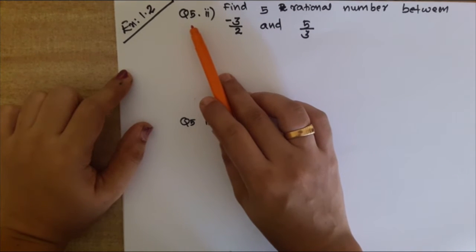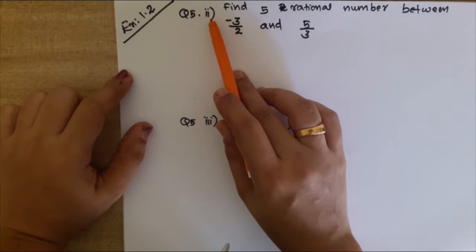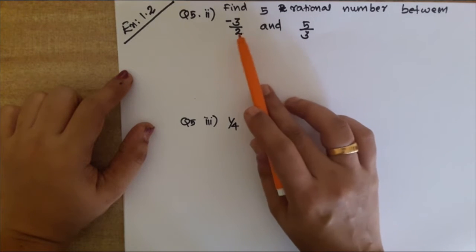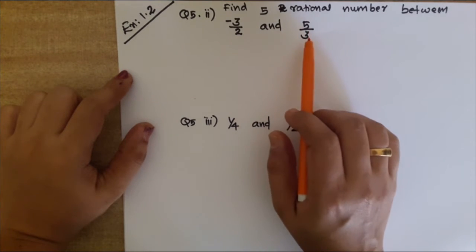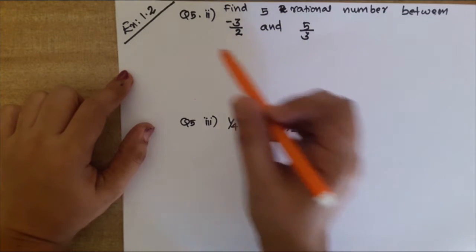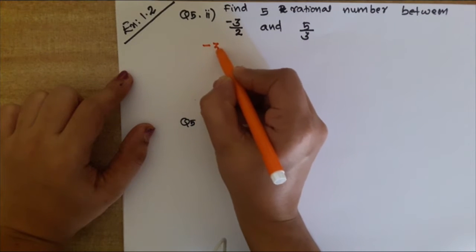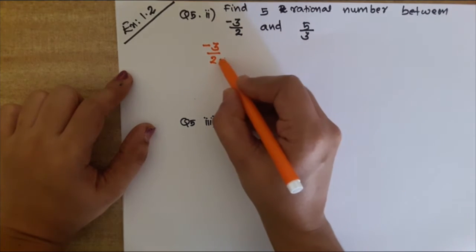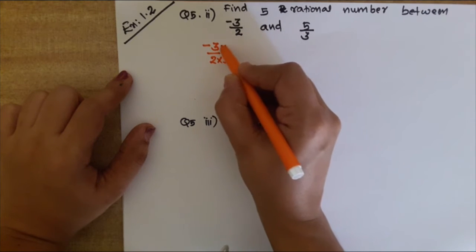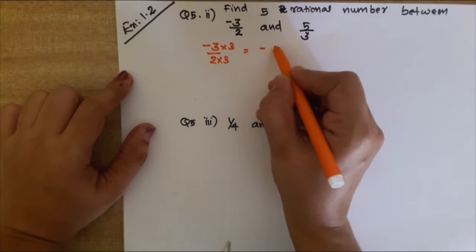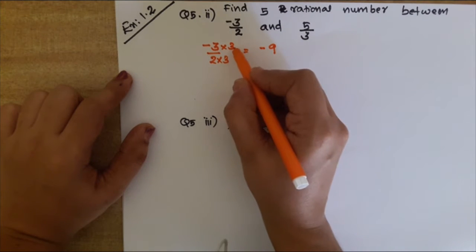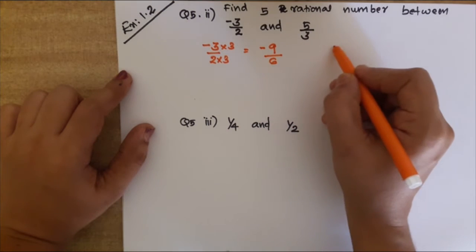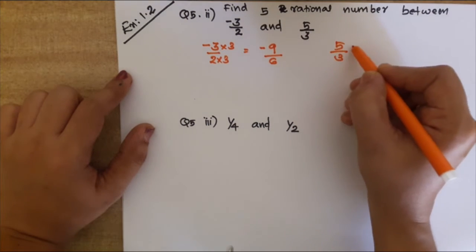Our next question is question number 5, part 2: find 5 rational numbers between -3/2 and 5/3. For this, we need to make the denominators of the two numbers the same. We multiply -3/2 by 3 in both numerator and denominator to get -9/6.